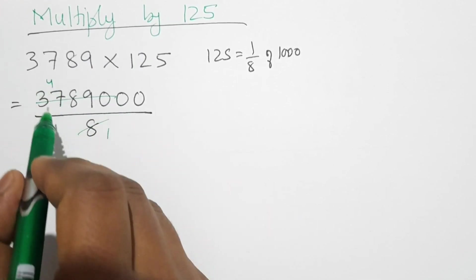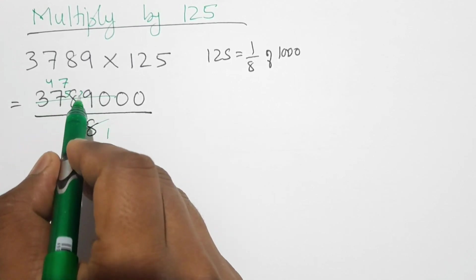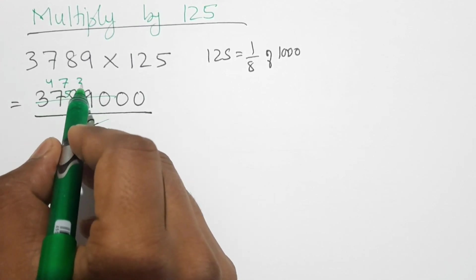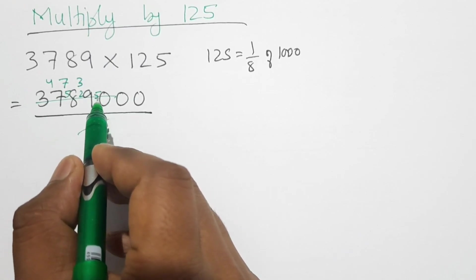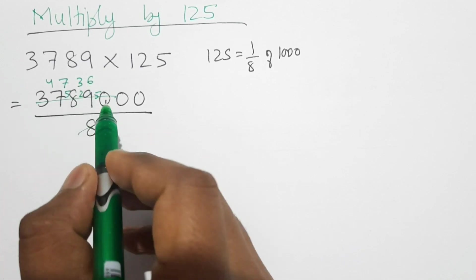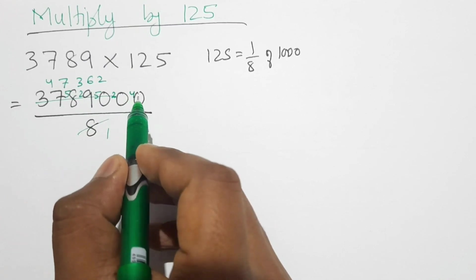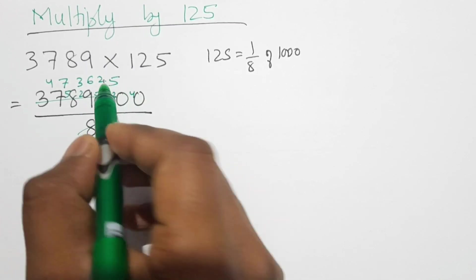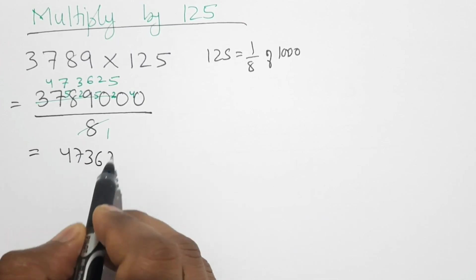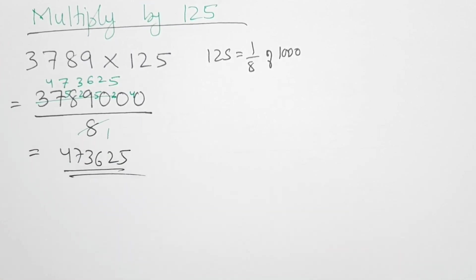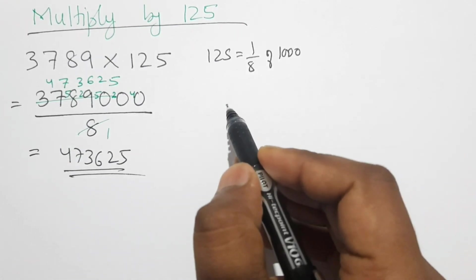Dividing 3789000 by 8: 8×4 is 32, 5 left; 8×7 is 56, 2 left; 8×3 is 24, 5 left; 8×6 is 48, 2 left; 8×2 is 16, 4 left; 8×5 is 40. The product is 473625. Let's do one more example with a bigger number.